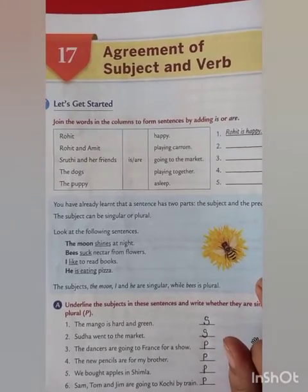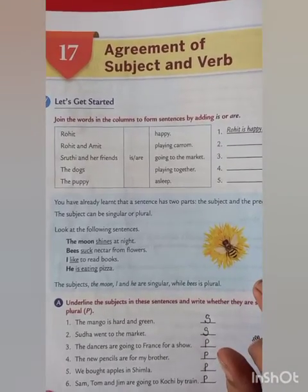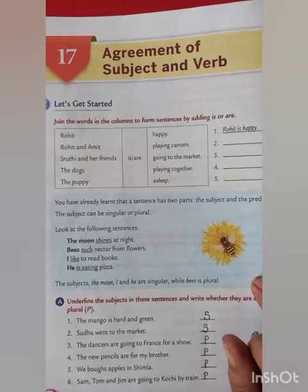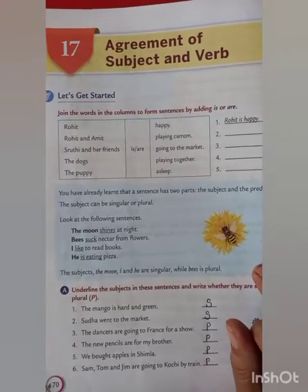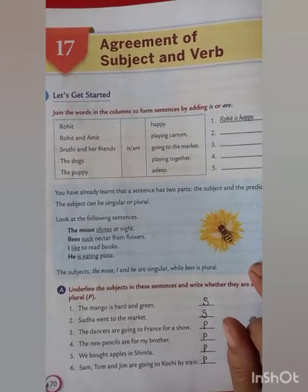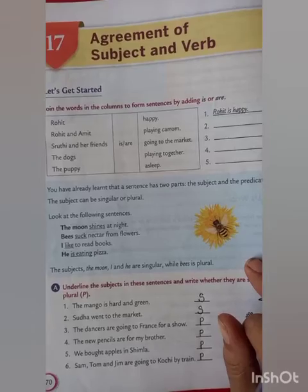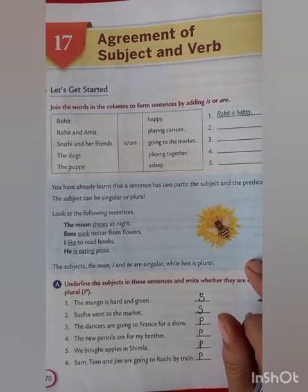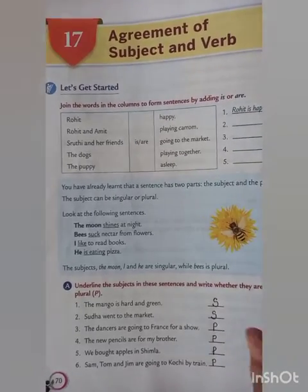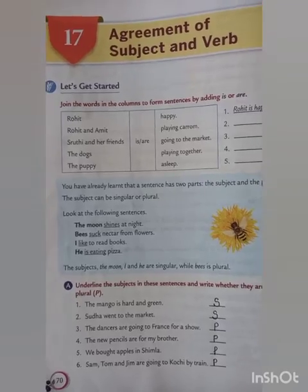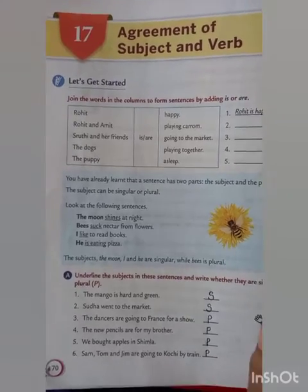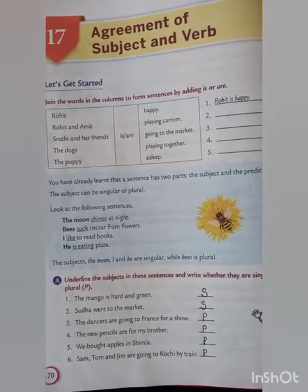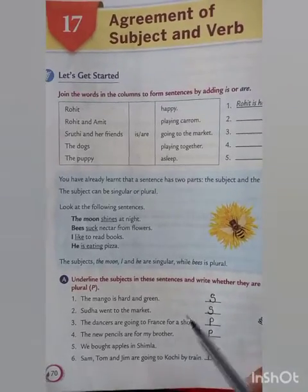Good morning class. Today's chapter 17 is agreement of subject and verb. Agreement — the word itself should make it clear to you. There is some agreement between the subject and the verb. So before starting, let's read a few sentences.